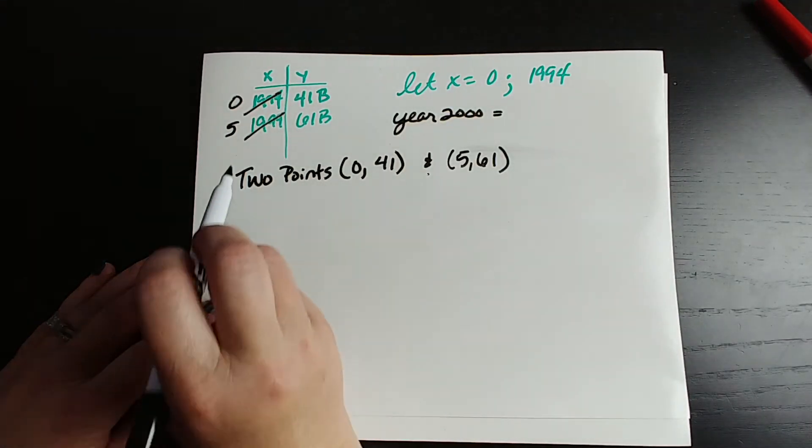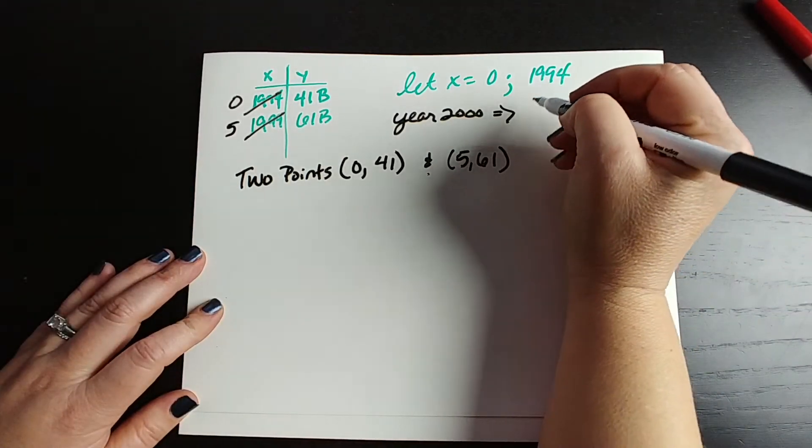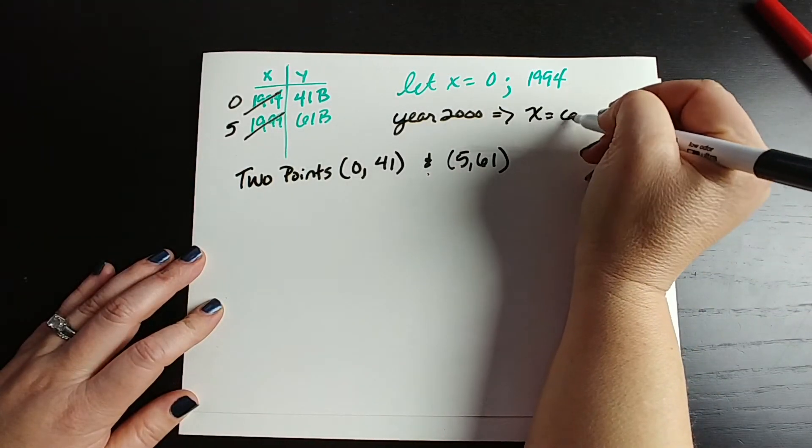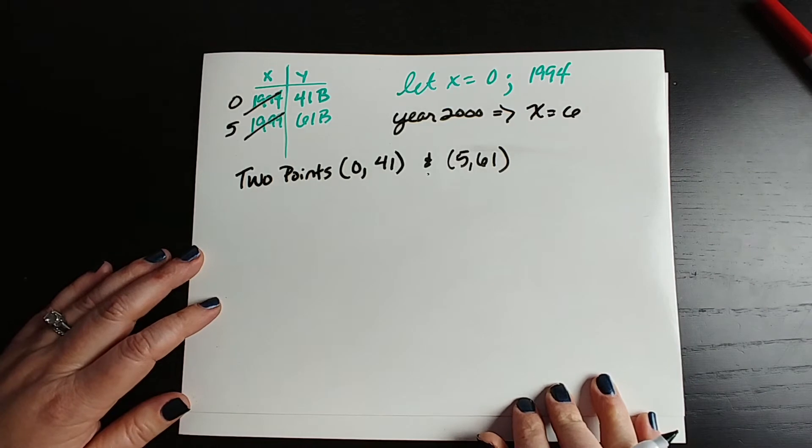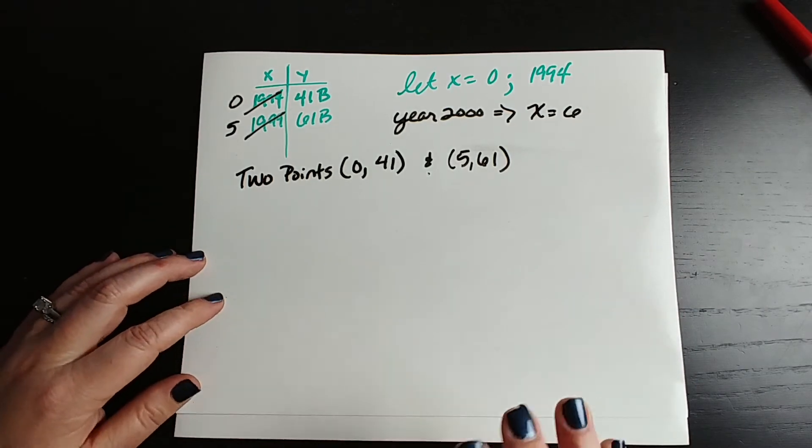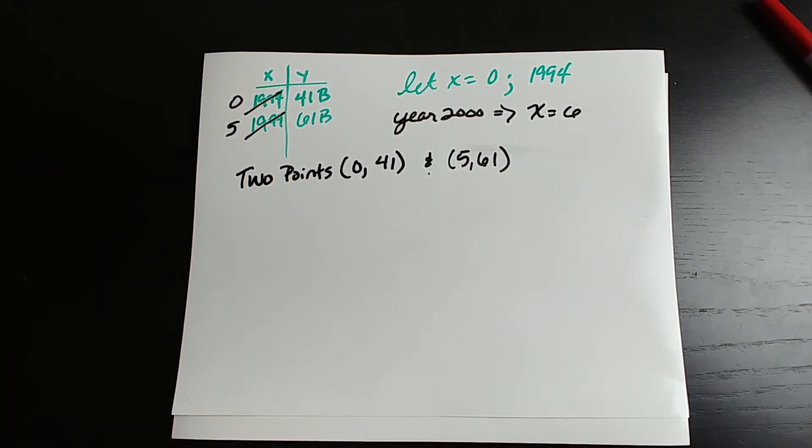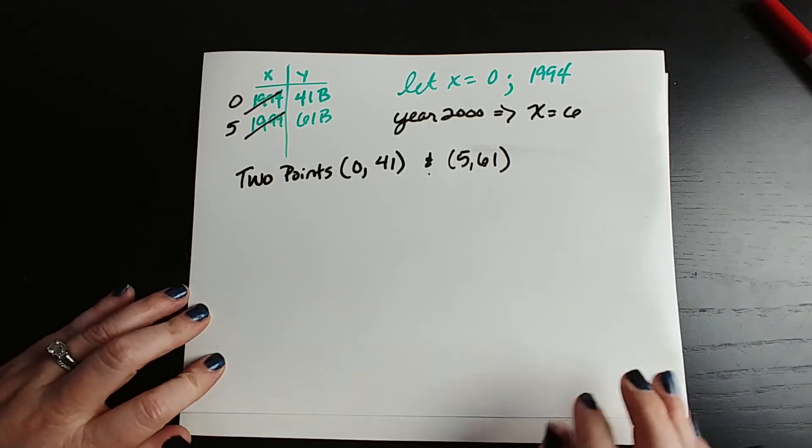So the year 2000, well, if 1999 has an x value of 5, that's going to have an x value of 6. So we'll put in 6 to our equation for x and solve for that. All right, so when you have two points, the only thing you can find from two points is a slope.